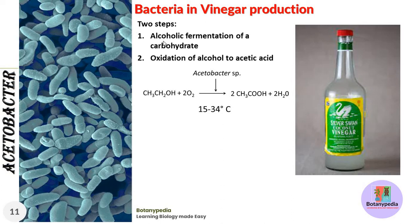Vinegar production involves two basic steps. First, alcoholic fermentation of a carbohydrate is carried out using a microbe in a fermenter to form alcohol. Second, the alcohol is oxidized to acetic acid. Ethanol is oxidized using Acetobacter species at a temperature of 15 to 34 degrees Celsius, ultimately producing acetic acid and water. This is how Acetobacter can be used to produce acetic acid, which is vinegar.